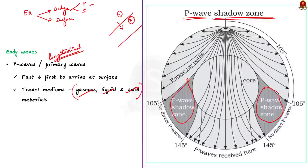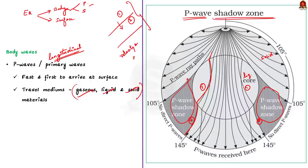What is the reason for the shadow zone? The inner surface of the earth can be divided into two mediums — one is liquid medium and the other one is solid medium. When the P waves enter the liquid medium from the solid medium, it undergoes refraction. Again, when it comes out of the inner core, it further undergoes a second set of refraction. And this is the exact reason why there is a shadow zone of P waves.